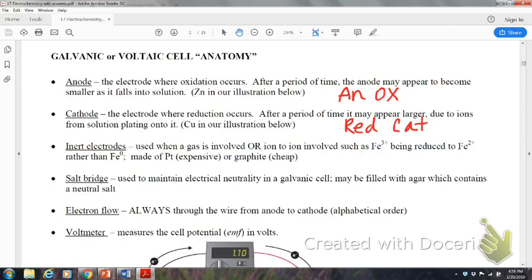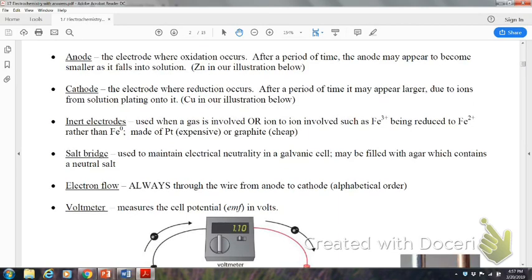We have inert electrodes that are often used when a gas is involved or when it's an ion-to-ion, such as one of the transition metals being reduced to the smaller charge, rather than putting just the iron in there in this case, and then sometimes platinum or graphite. We are actually going to do a mini lab or a labtivity where we're going to use graphite as our electrodes. So, it's going to be the first time we do it, so I hope it works well. The salt bridge, you have to have a salt bridge that is to maintain the electrical neutrality in the galvanic cell. It's going to be filled with an agar, and it's usually a neutral salt. Potassium nitrate, perfect example of what they like to put in the salt bridge.